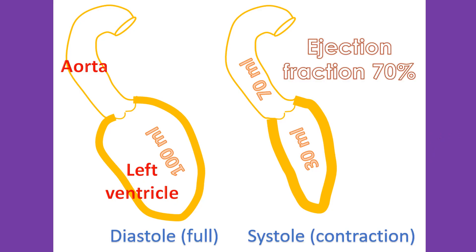Coming to the function of the heart, the focus is on the left ventricle, which pumps blood to the whole body. An important value in the report is the ejection fraction. Ejection fraction is the fraction of blood from the full left ventricle which is ejected out during each contraction. Suppose after filling, when the left ventricle relaxes in diastole, it has 100 ml of blood. If 70 ml is pumped out by the next contraction or systole, the ejection fraction will be 70%.